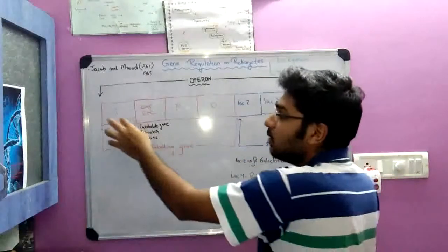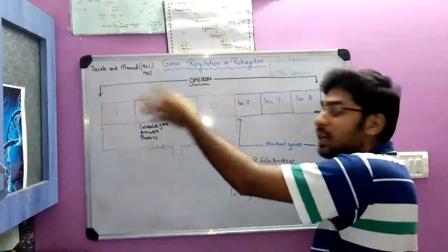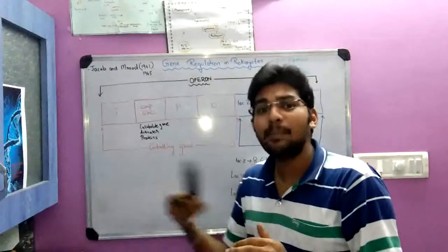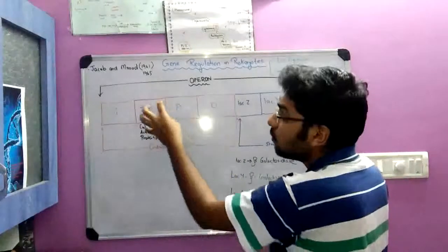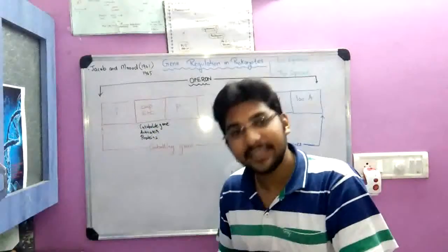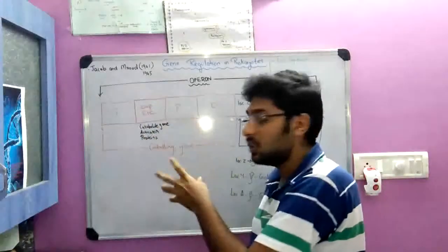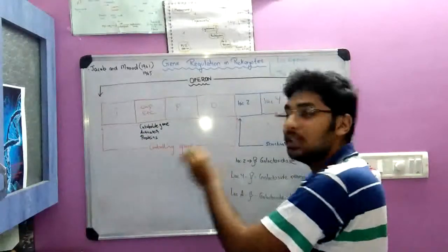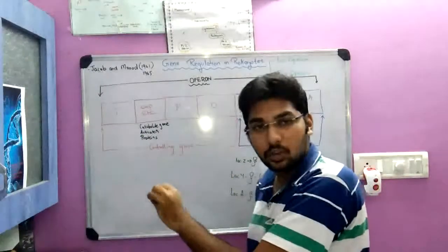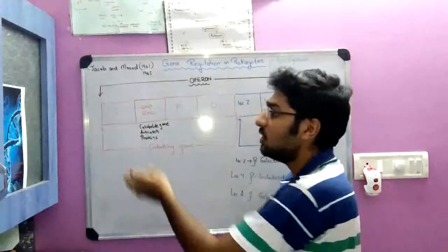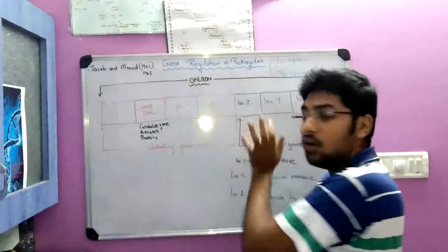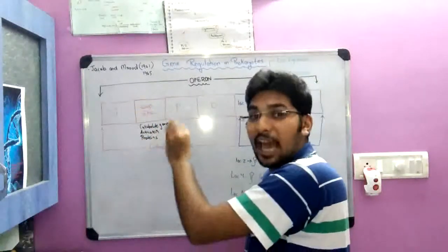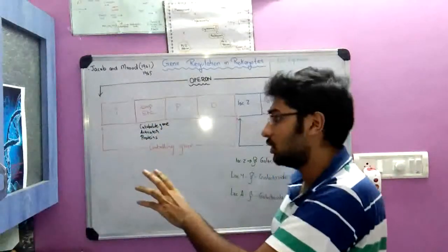In many textbooks, these three regions — I, P, and O — are given focus. But going a step deeper, there is also a small region called the CAP site, which is included under the controlling gene. For second-year PUC or BSc students, mentioning just I, P, O is enough; but for master's students, you also have to mention the CAP site region.